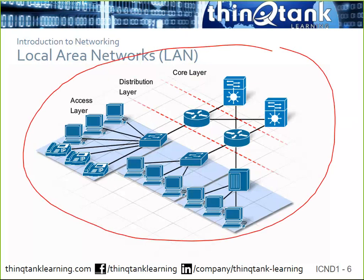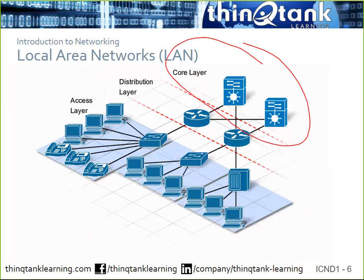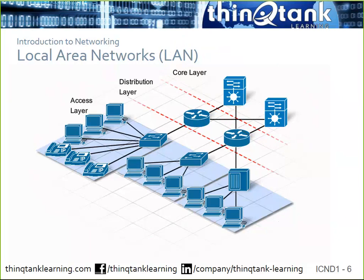This is a pretty typical building design model that Cisco promotes, called a three-layer hierarchical model. You've got the core of your network, which is responsible for getting data from point A to point B as quickly as possible without any delay. In the core we have routing — we route everything at the core. We don't run any policies or apply security at the core. It's purely IP routing.